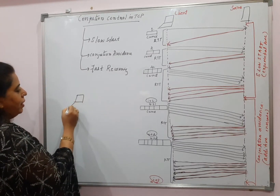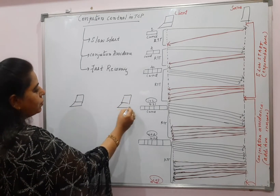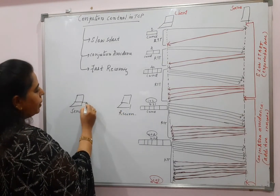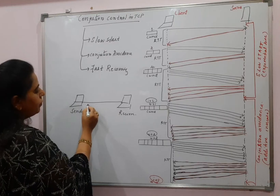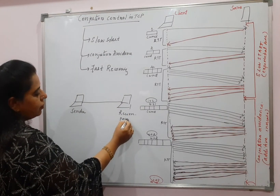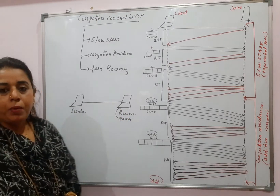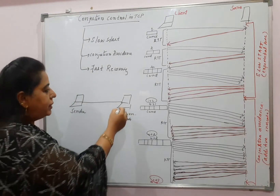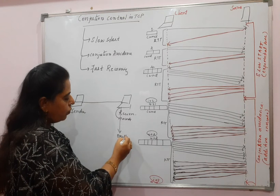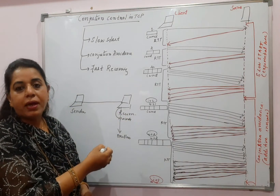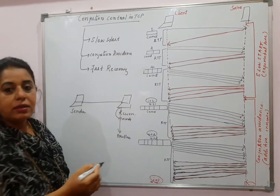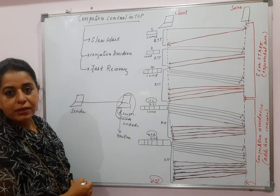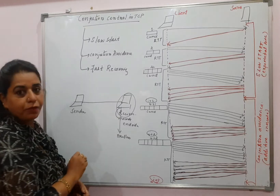Just to recall, I'll help you with a scenario. You have the source host — the sender — here and the receiver here. For flow control: if the receiver is not able to process packets at the same rate at which the sender is sending, there will be an overflow of packets at the receiver side. There should be some mechanism to control this flow, and that is called flow control — it is at the end side.